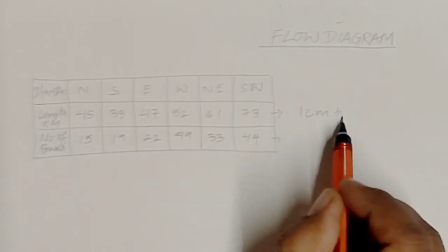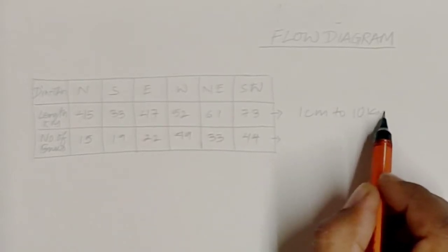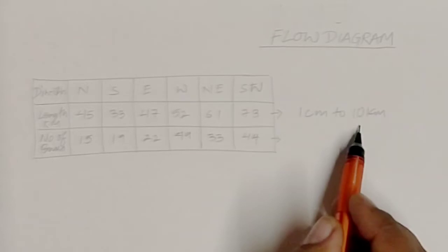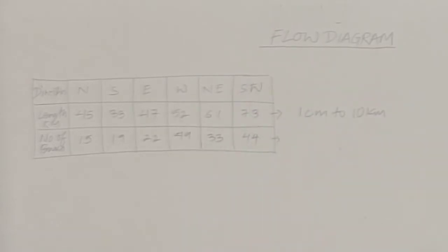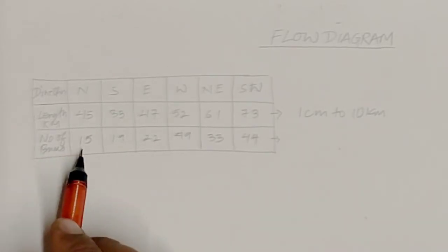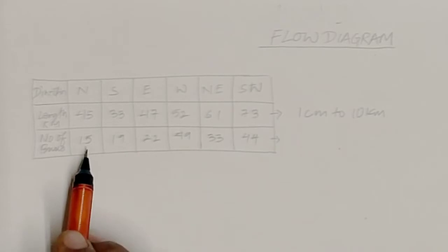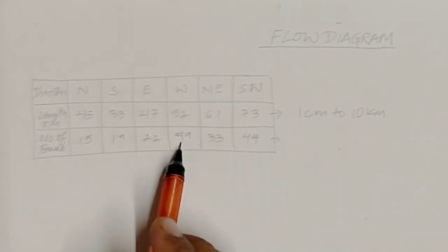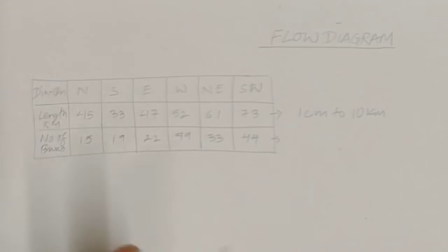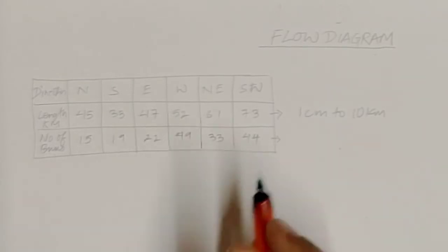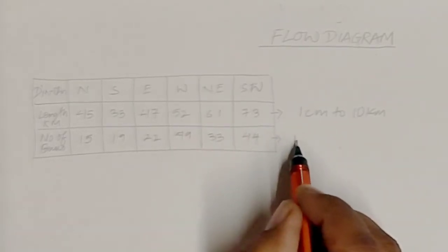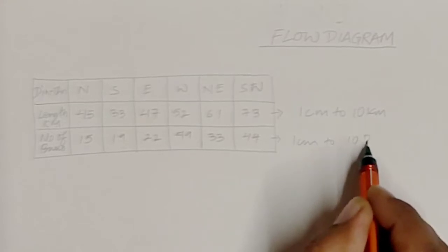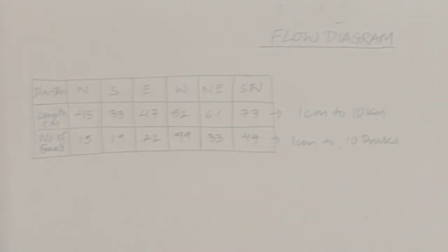For the length of the road, I'm taking a scale of 1 centimeter to 10 kilometers, meaning 1 centimeter on paper represents 10 kilometers on the ground. For number of buses, we also need a suitable scale for the highest value of 49 and lowest of 15, so the scale I'm taking is 1 centimeter to 10 buses.